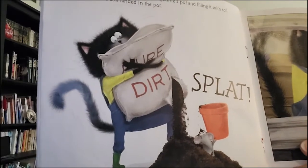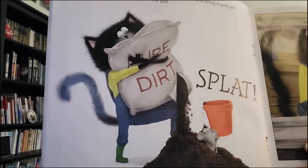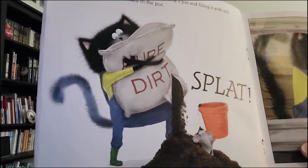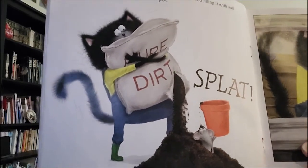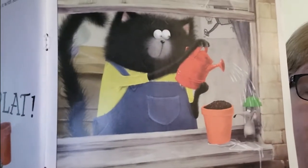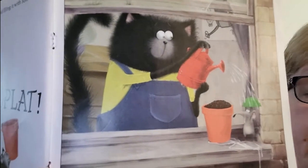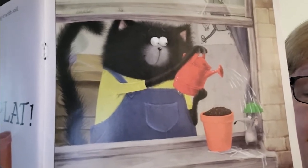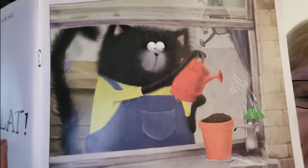The book said the first step was getting a pot and filling it with soil. Not all of the soil landed in the pot. Splat! Next, Splat planted the seed in the dirt. He set the flower pot on a sunny windowsill. Then he watered the soil. Not all the water went into the pot.